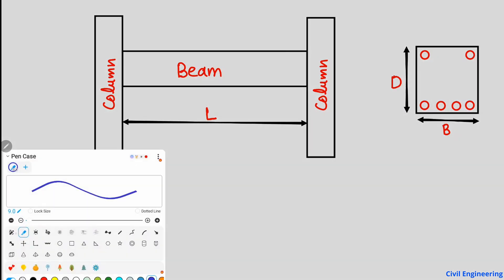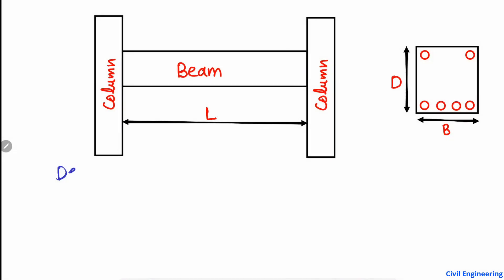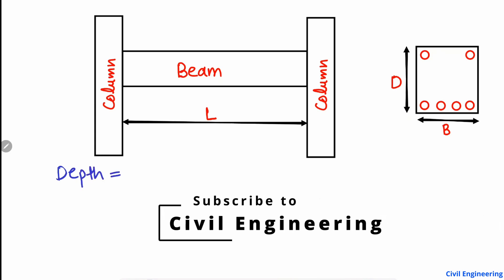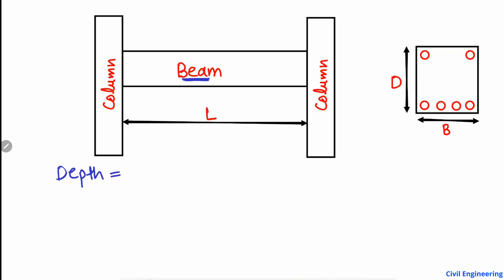So how can we find the depth of the beam by a thumb rule? We see here that a beam is a horizontal member which takes the load. For example, if a load is coming on the beam, the beam will take the load, produce some bending stresses, and then transfer the load into the columns. The column takes the vertical load transferred from the beam.